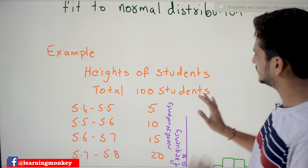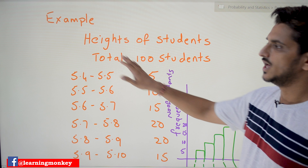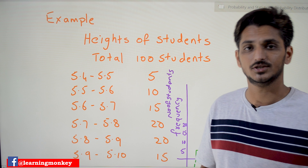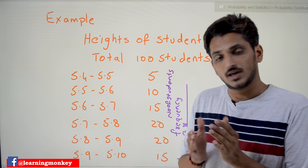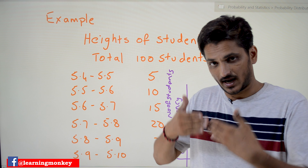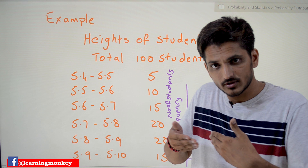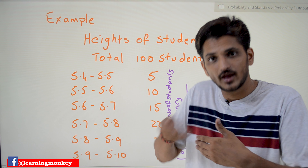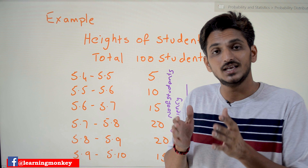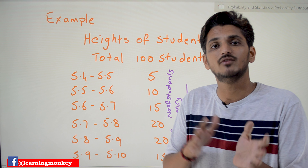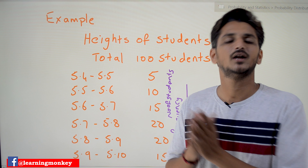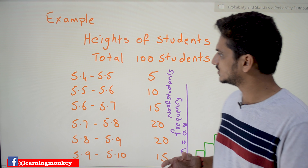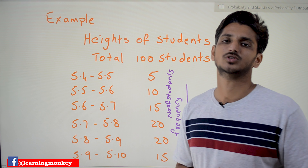Let's take an example and understand what a normal distribution is. If you take the heights of students, it is a continuous probability distribution because the height of a student may be 5.4, 5.401, 5.402, 5.45 — the height may be any value between 5 feet and 6 feet. That's why this goes into continuous probability distribution.